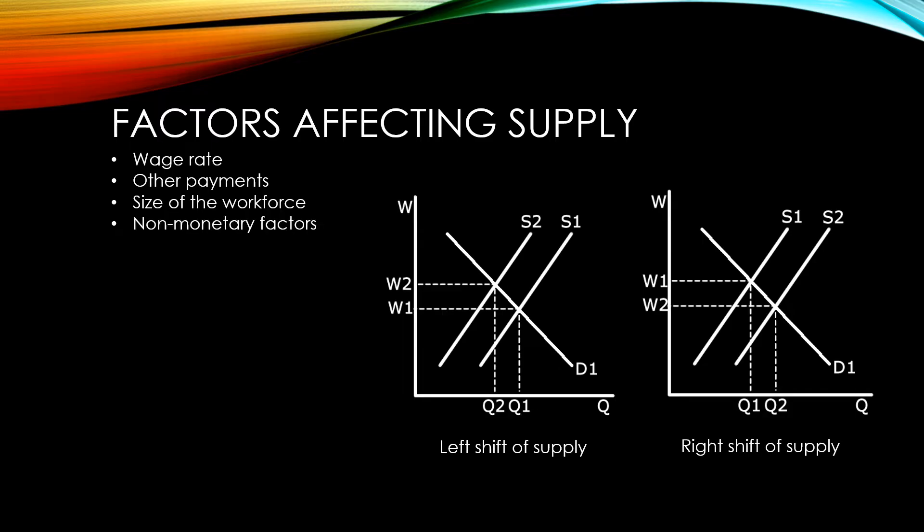Non-monetary factors like working conditions, opportunities for promotion and job security also influence the number of people willing to supply their labour. In recent times, flexible working and working from home has allowed a number of people who would have otherwise thought that a regular job could not fit around their other commitments to enter the workforce. This has led to a right shift in supply of labour.